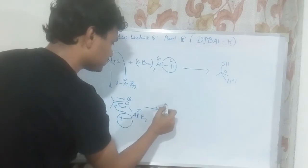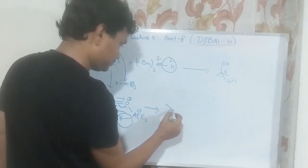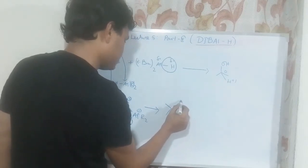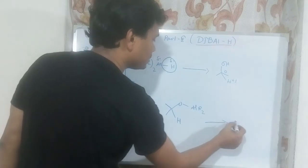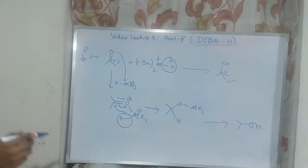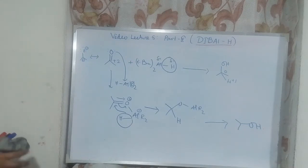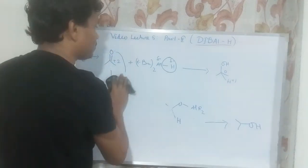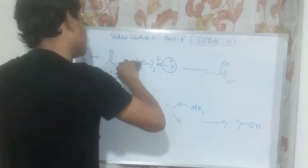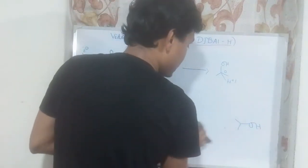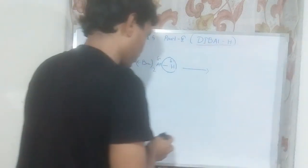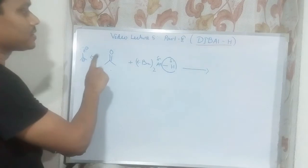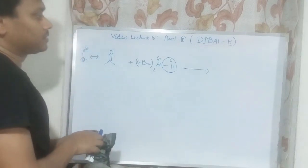The product after workup is the secondary alcohol. This property indicates similarity with lithium aluminum hydride and sodium borohydride. Now we will discuss one of the unique properties of DIBAL-H as a reducing agent — the selective reduction of an ester to an aldehyde. In the case of lithium aluminum hydride, we observed that it reduces esters completely to alcohols, or nitriles to amines. But DIBAL-H will selectively reduce an ester or nitrile to an aldehyde.